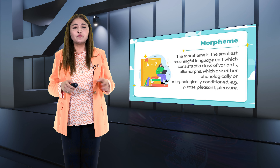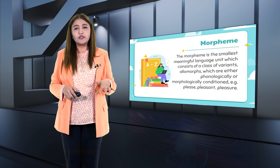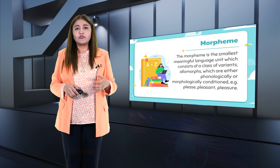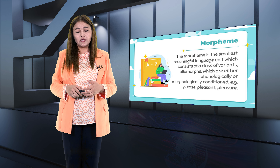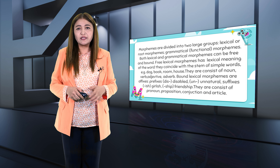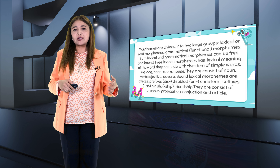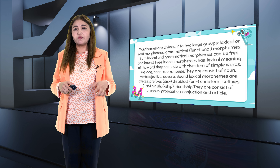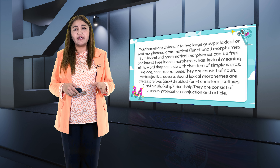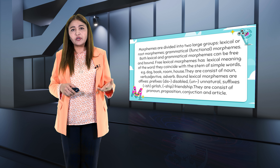Now I will explain about morphemes. The morpheme is the smallest meaningful language unit, which consists of a class of variants — morphs and allomorphs — which are either phonologically or morphologically conditioned. For example: please, pleasant, pleasure. Morphemes are divided into two large groups: lexical or root morphemes, and grammatical morphemes. Both lexical and grammatical morphemes can be free or bound. Free lexical morphemes have the lexical meaning of the word; they coincide with the stem of simple words, for example: dog, book, room, house.